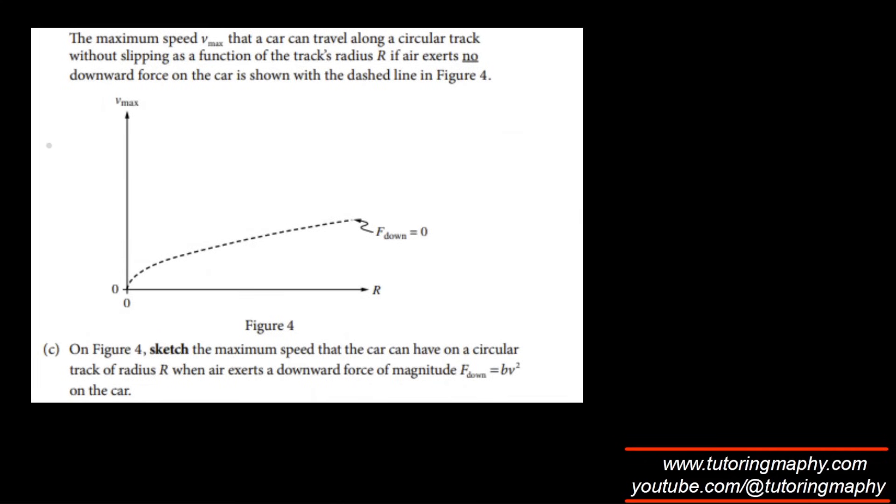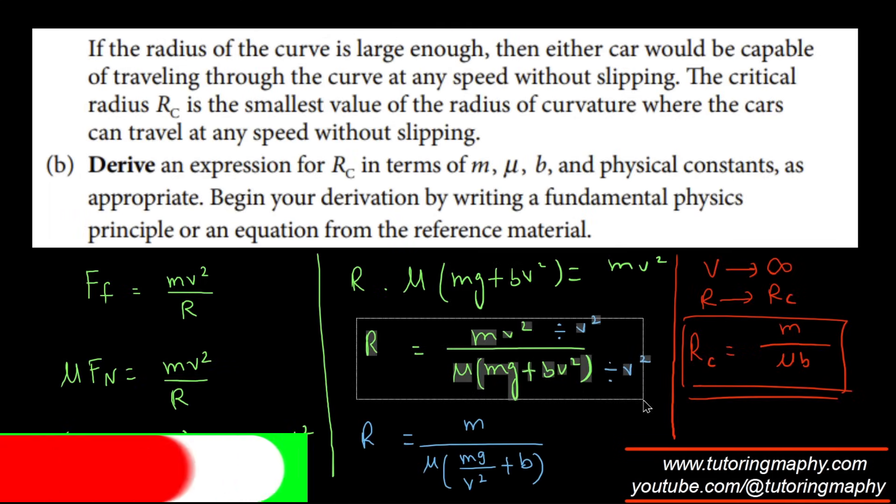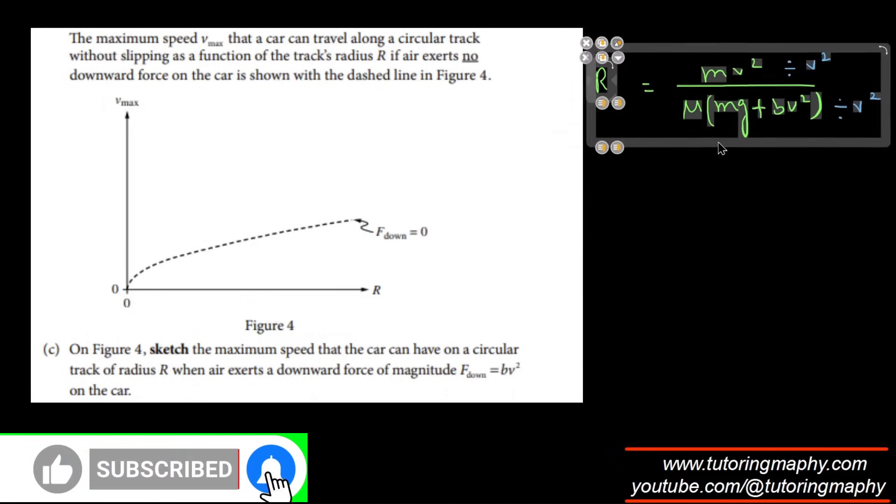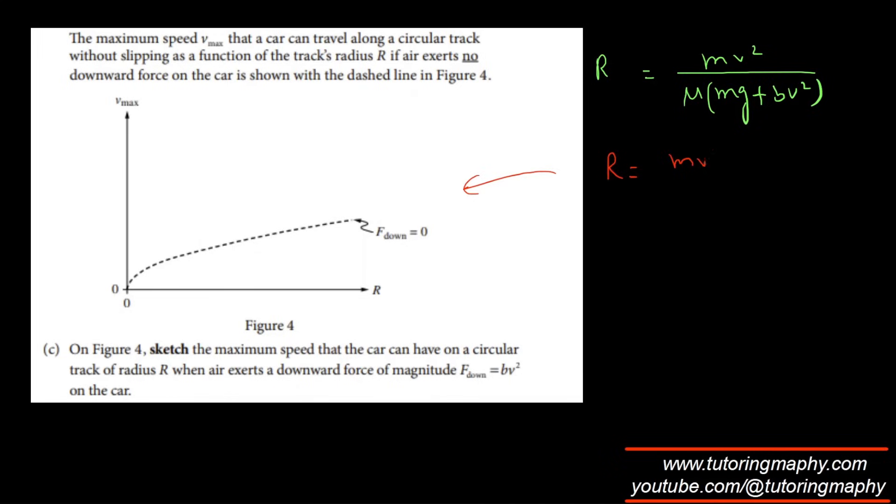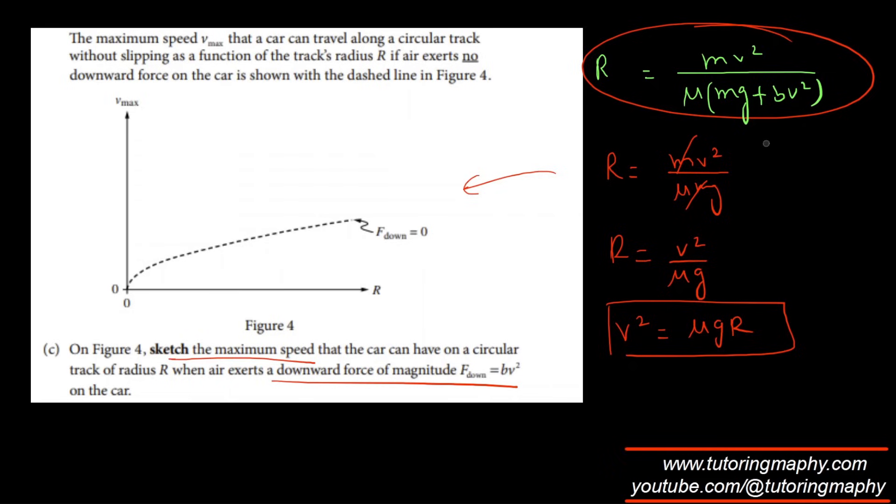So we are given that the maximum speed V_max that a car can travel along a circular radius without slipping as a function of track's radius R. If no air exerts no downward force on the car is given by this. I'm going to borrow the equation that I just got because that's going to be super helpful. Although I know that this is keeping the air resistance in mind, but I can easily change it. Because if the BV^2 is 0, then the equation that has been plotted is MV^2 over μMG, which is R is equal to V^2 over μG. And I'm going to isolate V because that's the Y. So it's V^2 is equal to μGR, which is obviously a parabola opening towards the plus R axis.